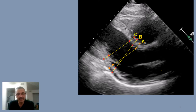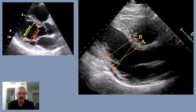Look at this end-diastolic PLAX view picture — three techs did three different measurements. Which of them is correct? Or when we have a sigmoid, prominent sigmoid septum, which spot is best for measurement and most accurate?